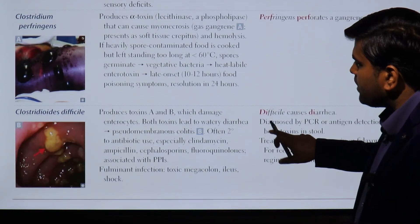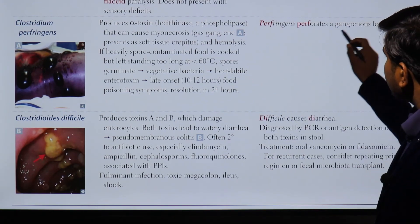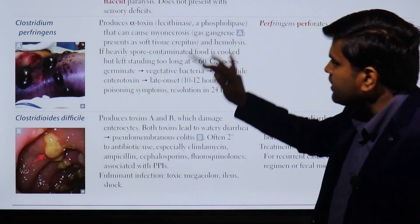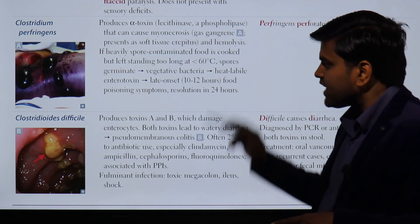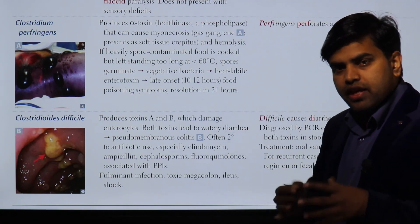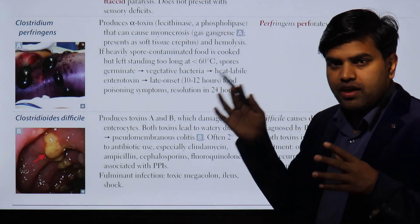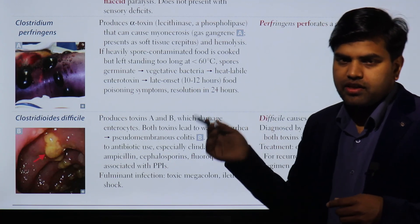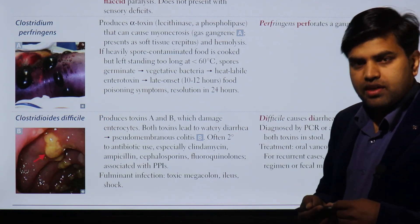C. difficile is very important and will have a separate revision. To summarize: C. perfringens causes two diseases — gas gangrene and food poisoning. The food poisoning has late-onset symptoms, developing later than B. cereus. Early-onset food poisoning is B. cereus; late-onset is C. perfringens. Both are due to preformed exotoxin causing the disease.